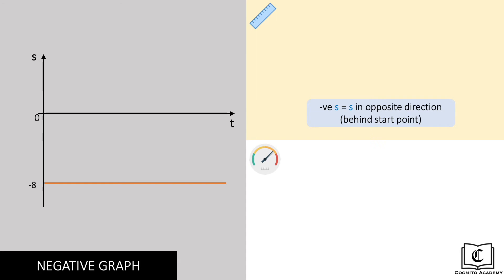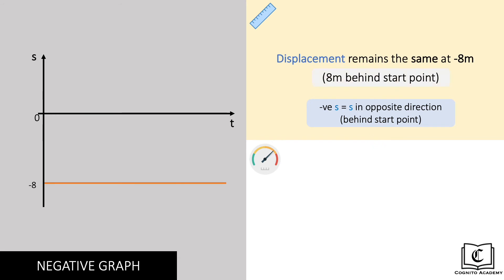Here, displacement remains the same at negative 8 meters, meaning that the object is 8 meters behind the start line for the entire duration. Looking at the gradient, since this graph is a straight line and flat, gradient and hence velocity is 0, and the object is stationary.